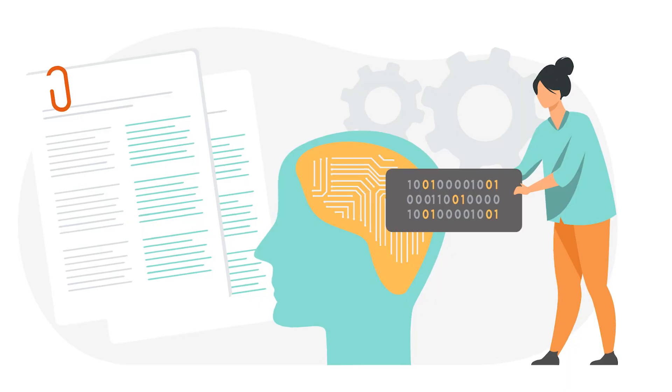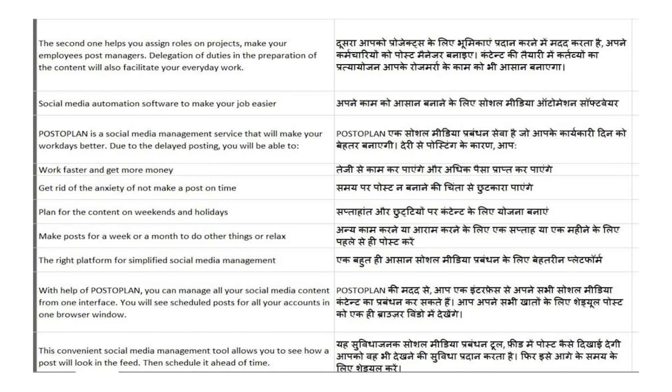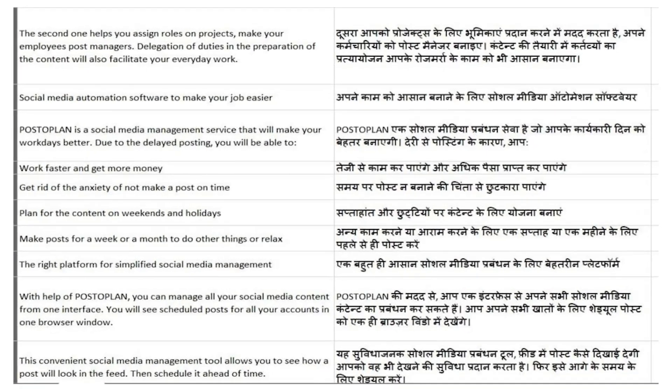For the data collection part, we had an option to collect parallel corpora — that is, English sentences paired with their respective Hindi sentences. We also thought of getting data from English novels, specifically novels originally written in English that had been translated into Hindi.